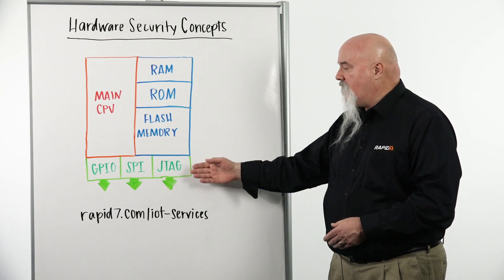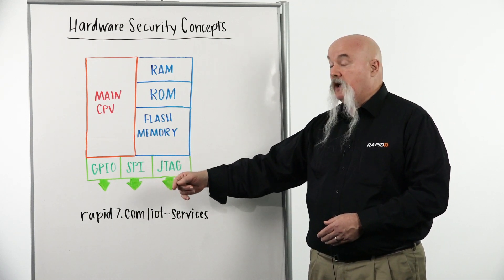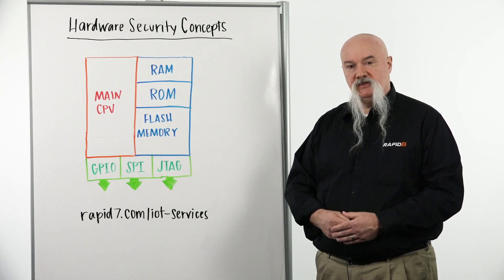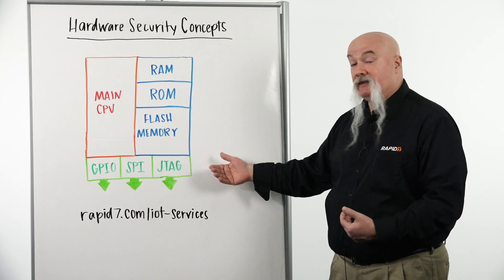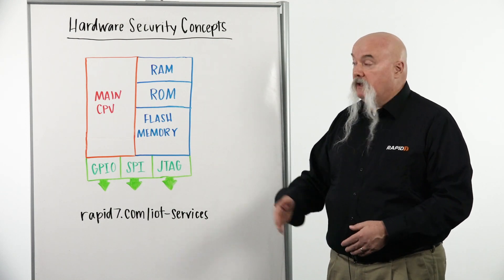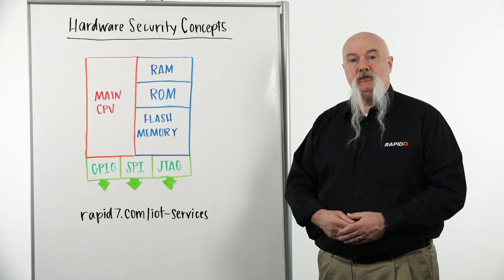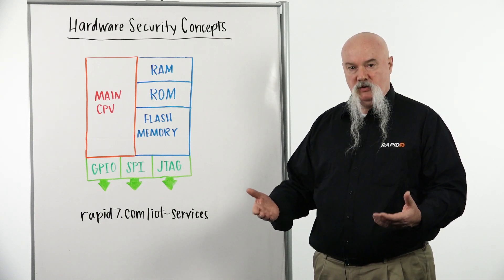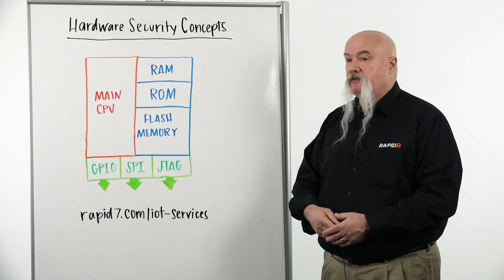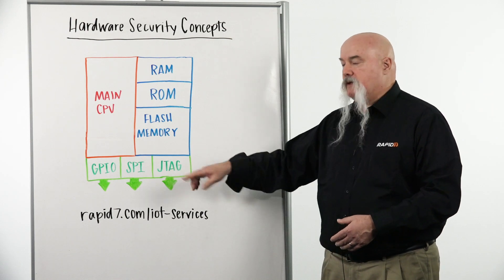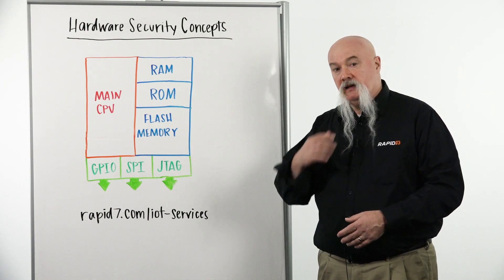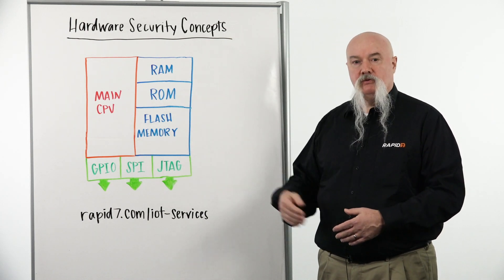The other one is, how can we gain access via JTAG, SPI, or various other configurations on this device? And it's fairly simple most of the time, unless the manufacturer decides to properly deploy the technology the way it was meant. And the way they do that is we can often disable JTAG or SPI via settings within the actual chip.